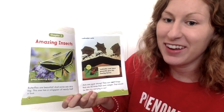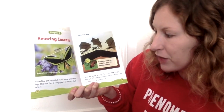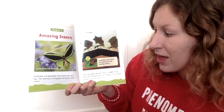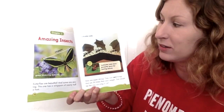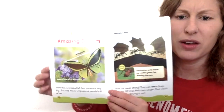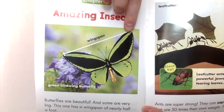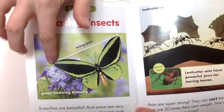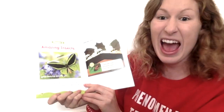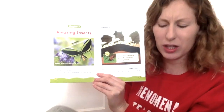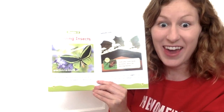Chapter 3, amazing insects. Butterflies are beautiful and some are very big. This one has a wingspan of nearly half a foot. The wingspan is from one wing to the other side of the wing — that's its wingspan, and they say it can be nearly half a foot. I want everyone to look at their foot right now and think it can be that big.